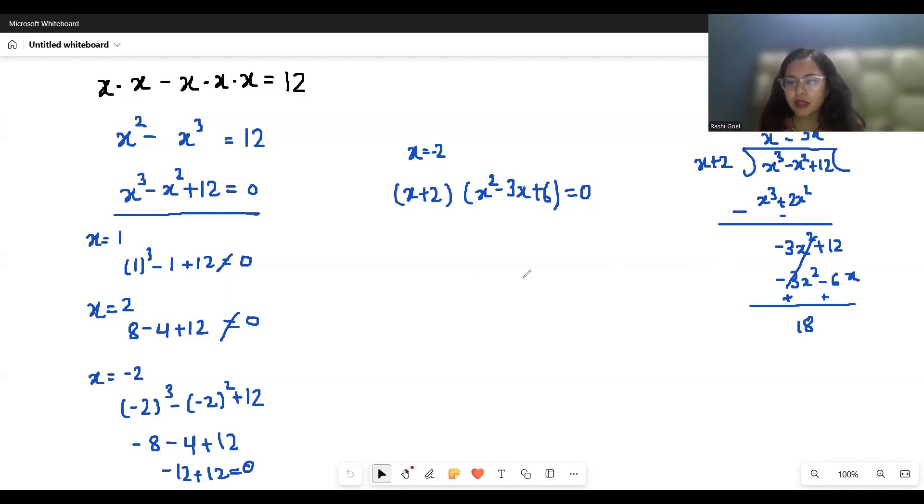Plus 6x plus 12. After division, we get x squared minus 3x plus 6 equals 0.